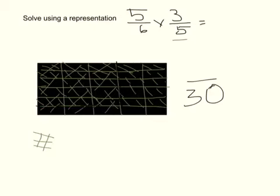So there's 1, 2, 3, 4, 5, and 1, 2, 3. So 5 times 3, which is 15.